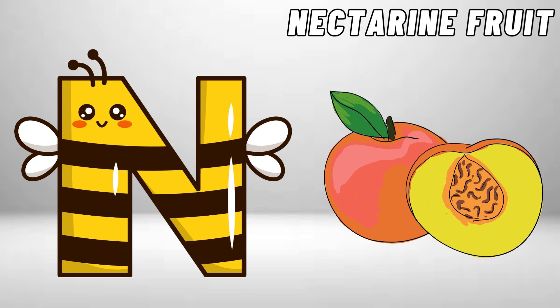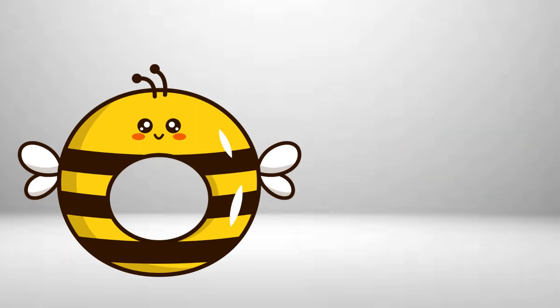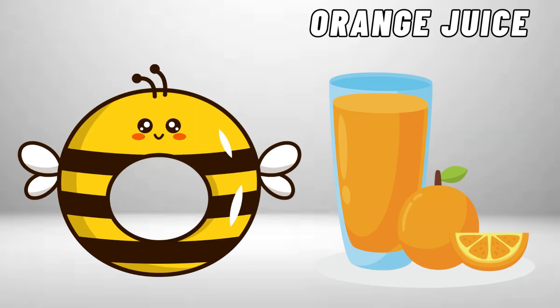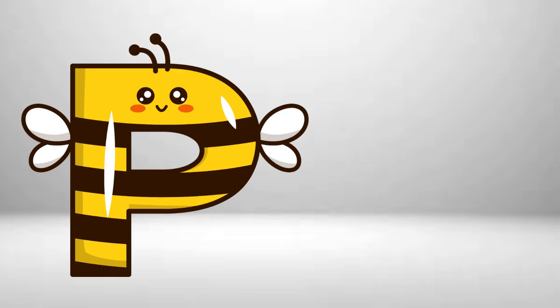N is for Nectarine Fruit. N, N. Nectarine Fruit. O is for Oranges. O, O. Oranges.